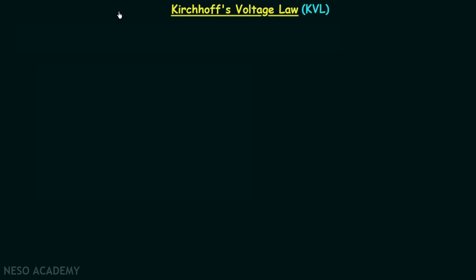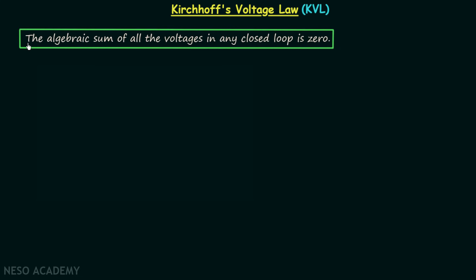In the last lecture we had discussion on KCL and now we are going to understand what is KVL and how to apply KVL. The statement of KVL is: the algebraic sum of all the voltages in any closed loop is 0. When you calculate the algebraic sum of all the voltages, considering their signs, you will find it is equal to 0 in a closed loop.